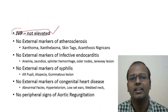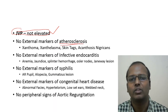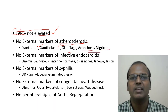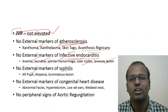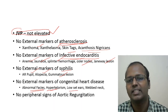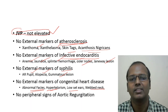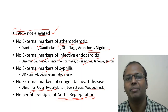JVP will be discussed in a separate module. You can also check for external markers of atherosclerosis: tendon xanthoma and in the peri-orbital region there can be xanthelasma, skin tags, and acanthosis nigricans suggesting an insulin-resistant state. External markers of infective endocarditis include anemia, jaundice, splinter hemorrhages, Osler's nodes, and Janeway lesions. External markers of syphilis include Argyll Robertson pupil, alopecia, and gummatous lesions. External markers of congenital defects include abnormal facies, hypertelorism, low-set ears, and webbed neck. You should also check for peripheral signs of aortic regurgitation, discussed in a separate module.